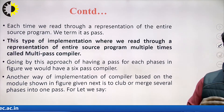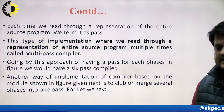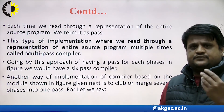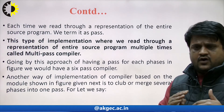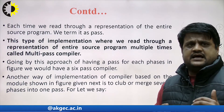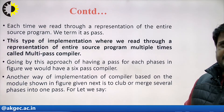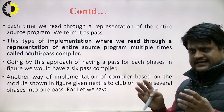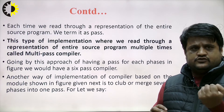Going by this approach of having a pass for each phase, as in the previous figure, we would have a six-phase compiler. So six phases each work as a pass or module, and this compiler is also known as a six-pass compiler. Another way to implement a compiler is to club certain phases into one pass, as shown in the next figure.